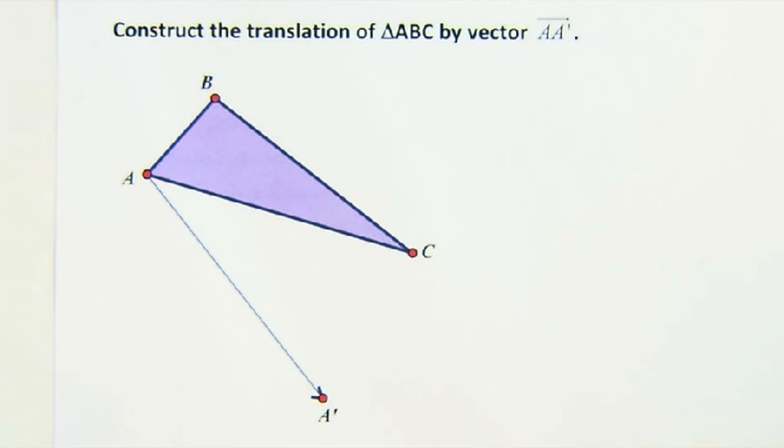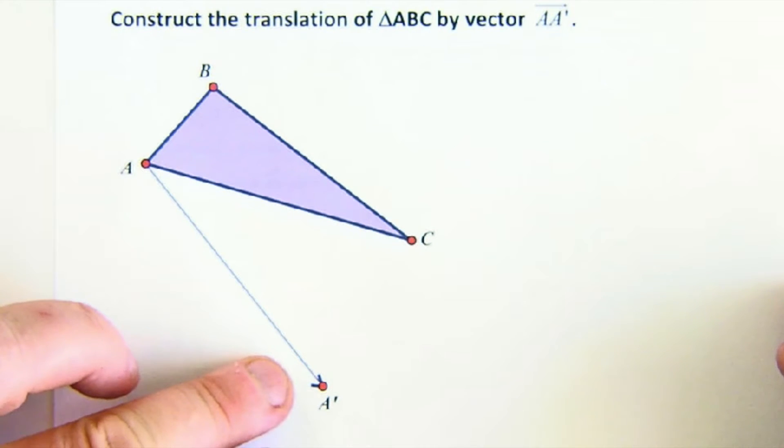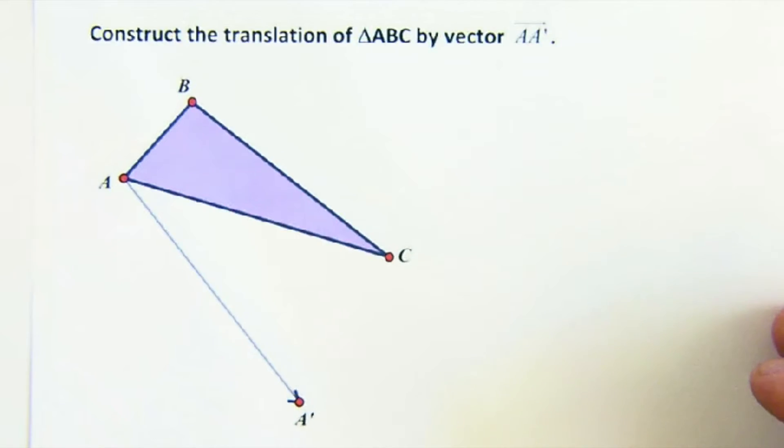All right, let's look at the construction of a translation using a compass and straight edge. Now, in this case, the translation vector is connected to A, which is actually quite nice because it tells you where A' will land. And sometimes that vector might not be directly on the shape like that, but this is definitely a nice start for us.